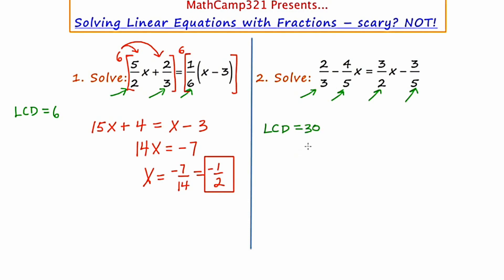So what I'm going to do is take that LCD and multiply both sides of the equation by the LCD. 30 distributed into two thirds is going to be 60 thirds or 20. 30 times four fifths x is going to be 120 over 5x or 24x. Moving to the right hand side, 30 times three halves x is going to be 90 halves x or 45x. And finally, we have 30 times three fifths, which is 90 fifths or 18.